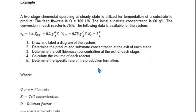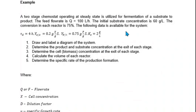The feed flow rate is Q equals 100 liters per hour. The initial substrate concentration is 60 grams per liter. The conversion rate for each reactor is 75% and the fluid data was provided. The doubling time TD is given at 4 hours. The yield of cell concentration per substrate Y_XS is 0.2. The yield of product per substrate Y_PS is 0.75, and Ks is 2 grams per liter.